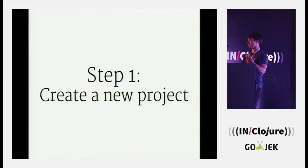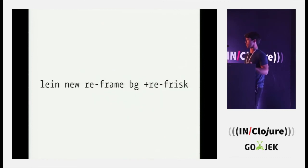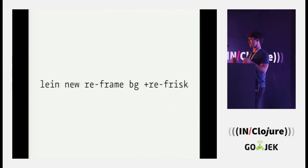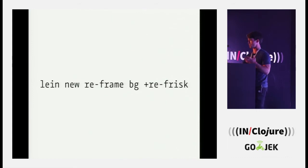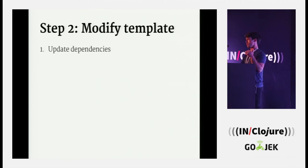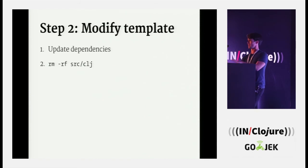Step one: make a new project. Use a template. Build on top of what other people have built — don't start from scratch. Starting a ClojureScript project from scratch using Leiningen is expensive: you have to look at a lot of documentation, there's a lot of configuration. Use the re-frame template, make a project called BG, add in re-frisk. Templates are great — they save you a lot of ceremony — but you'll almost always disagree with something or dependencies will be out of date, so update your dependencies. Also, we're not writing any Clojure code — it's entirely in the browser — so delete the Clojure directory.